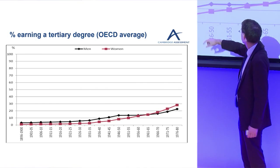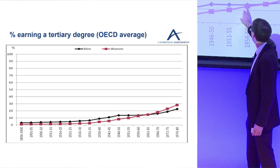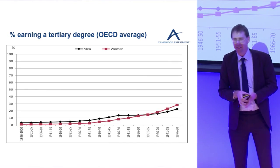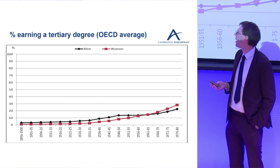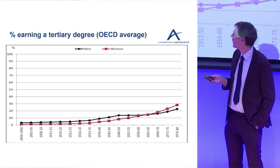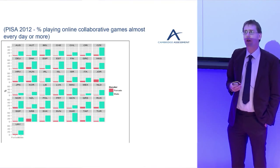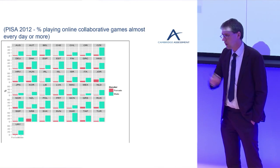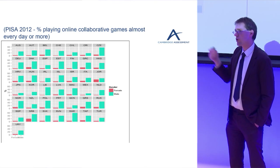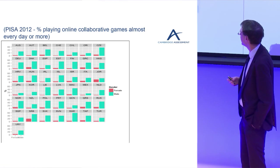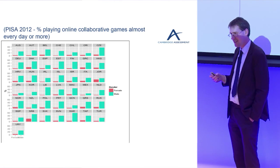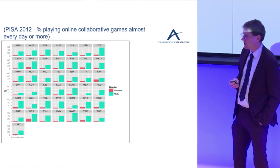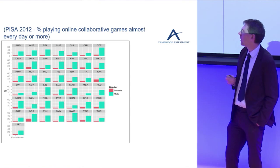Within 10 years, that gender gap disappears and changes the other way, with more women having degrees than men. That's an older gender gap, and we've seen how that can change quickly. PISA measures a lot of different things, and I've got seven slides showing some of these different things that can be measured by PISA.